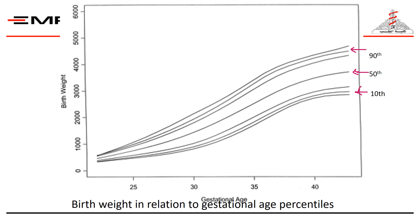This chart shows birth weight in relation to gestational age. Gestational age is plotted on the x-axis in weeks, and birth weight on the y-axis in grams. The percentile lines shown are the 3rd, 10th, 25th, 50th, 75th, 90th, and 97th. Birth weight between the 10th and 90th percentile is considered appropriate for gestational age. Below the 10th centile is small for gestational age, and above the 90th percentile is large for gestational age.